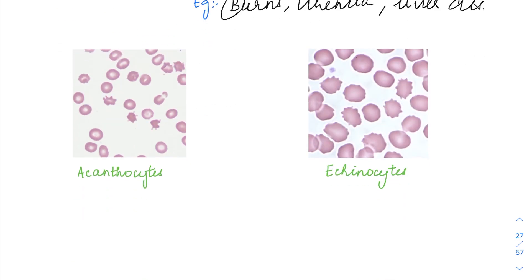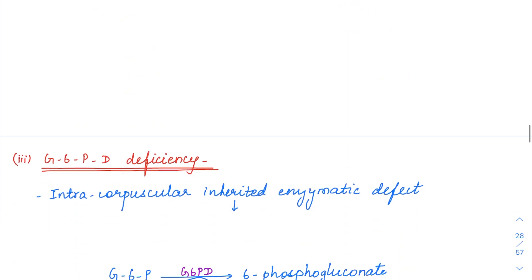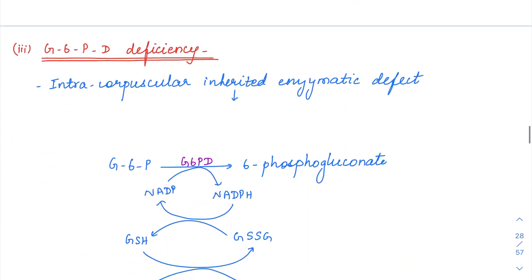In the image of acanthocytes, the RBCs have random spikes — small and large — spaced at irregular intervals. For echinocytes, you see smaller, regularly spaced regular spikes.